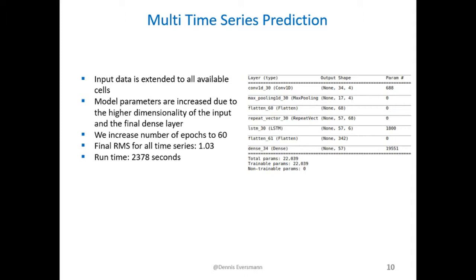The model summary is shown on the right-hand side. You can see that the parameters increased since the input shape of the data increased by a factor of 57. Especially the last layer, which is now a dense layer of the shape of 57, increases the number of parameters drastically.